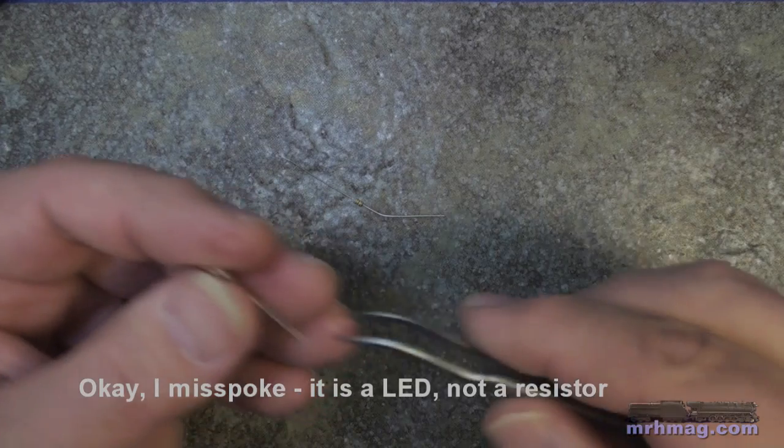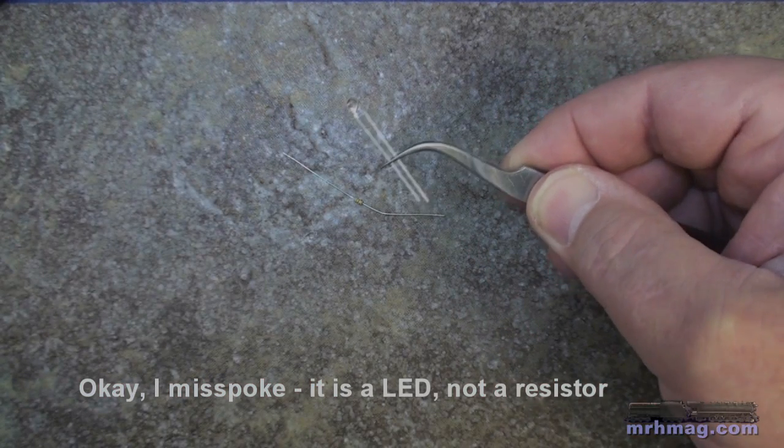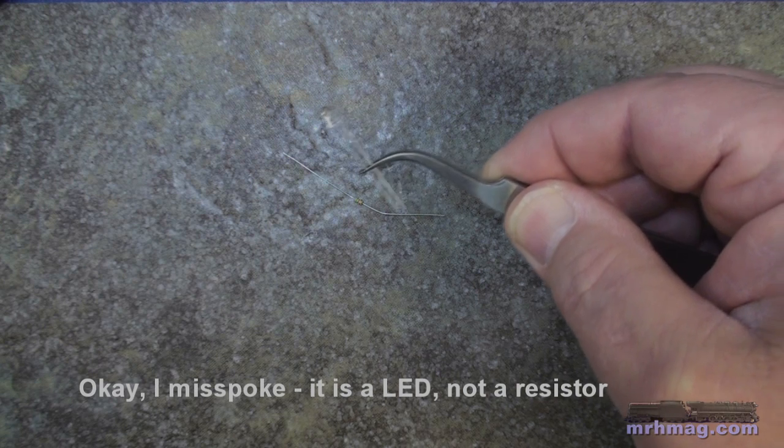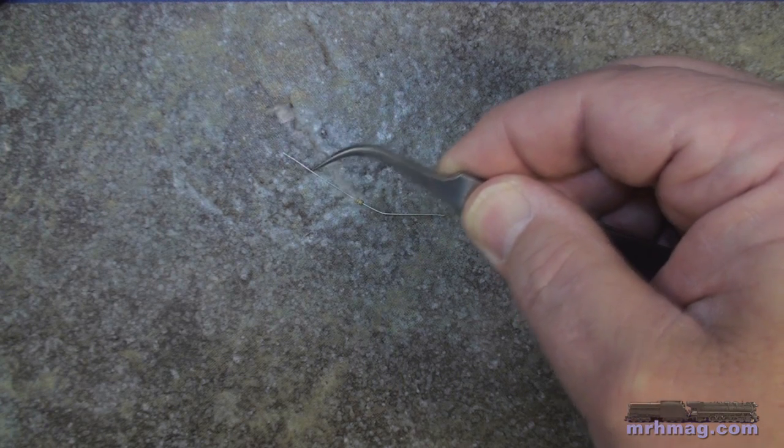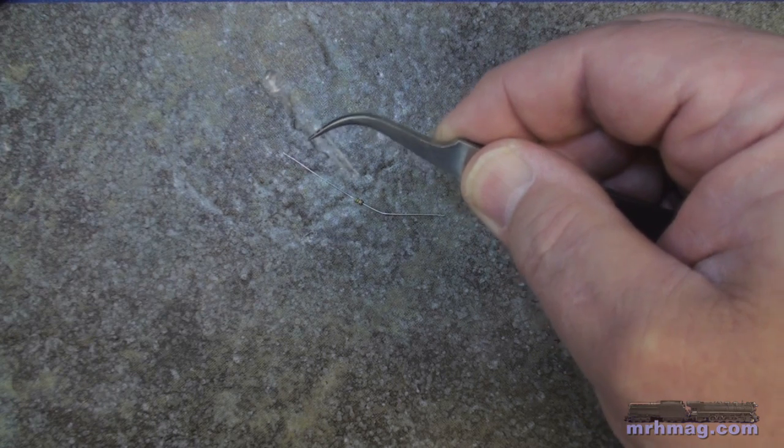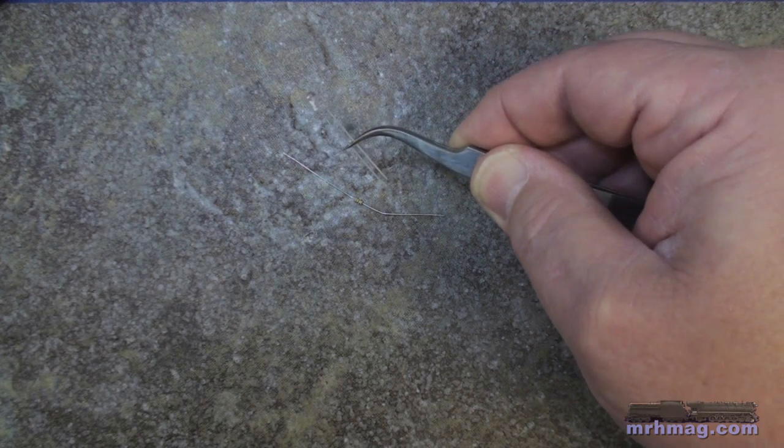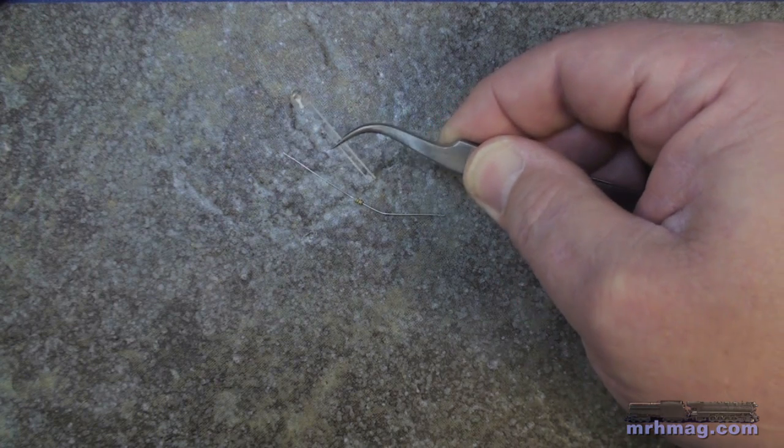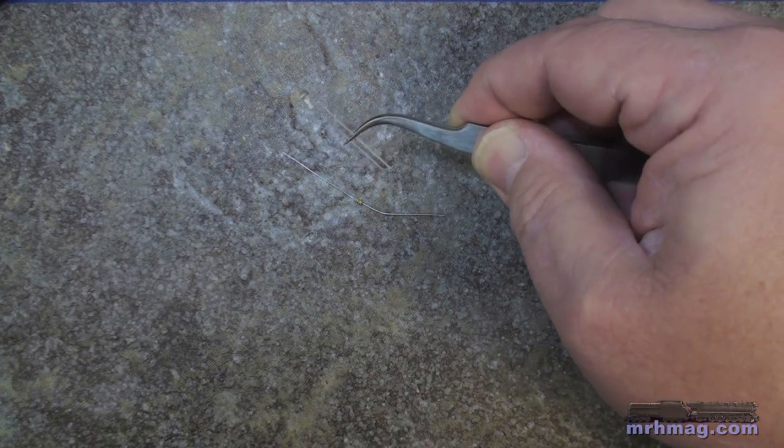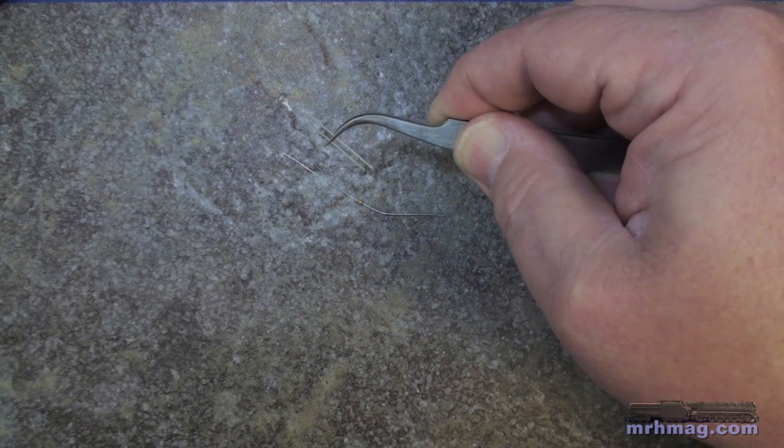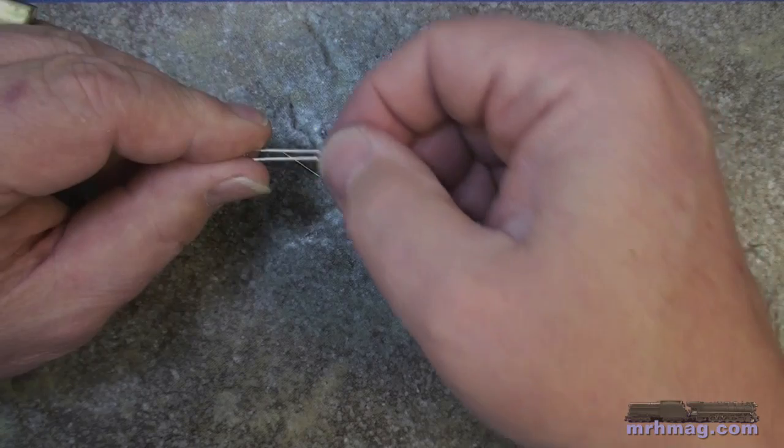This is a standard resistor, regular bodied resistor, nothing particularly special. In fact, these are ones that I got for a really good price, a few cents apiece, that I use for lighting projects in buildings. It's a pretty bright white LED, but it's a good thing to practice on too because they're fairly inexpensive.